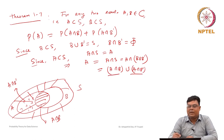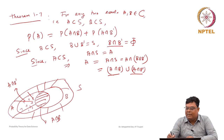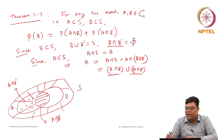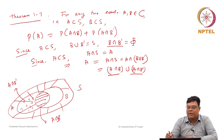Now, A intersection B and A intersection B complement will be disjoint, because B intersection B complement is already disjoint. Any element belonging to A intersection B belongs to B, and any element belonging to A intersection B complement belongs to B complement. So any element cannot be in both parts, because then it would belong to both B and B complement, but B intersection B complement is the null set. Therefore A intersection B and A intersection B complement are disjoint.